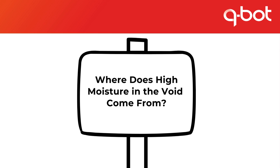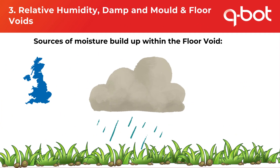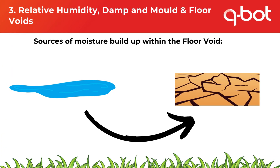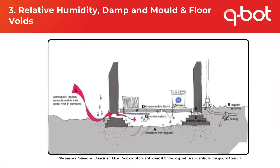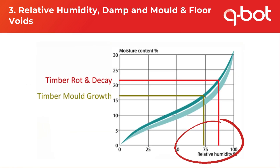Air infiltration from floor voids creates invisible health hazards as fungal spores, microbes and bacteria are transferred into our living space. But where does the moisture in the void come from? Predominantly it comes from the ground — our climate means the ground is mostly wet, and moisture moves from wetter to drier areas naturally due to hygroscopic movement. Floor voids are much drier than outside because they're shielded and heated by the property, creating a constant suction of moisture into this underground void. Other sources include lack of external site drainage, leaks from services, external air ingress especially in summer, and undetected roof leaks. All of these contribute to the 60–95% relative humidity found within floor voids and the resultant damp, mould and decay. This range lies within the sweet spot for timber mould growth, rot and decay — well outside recommended safe humidity levels.